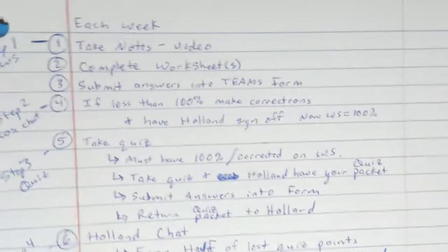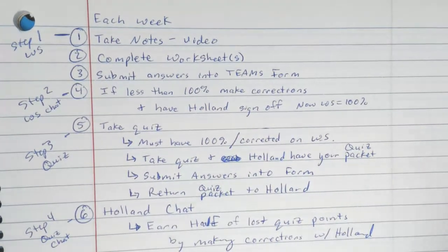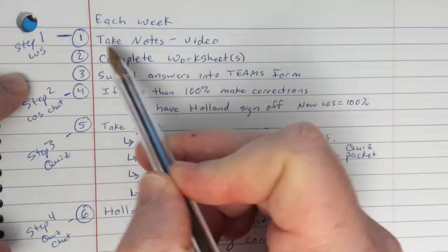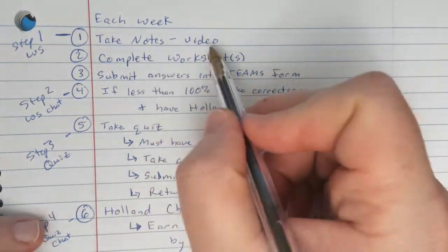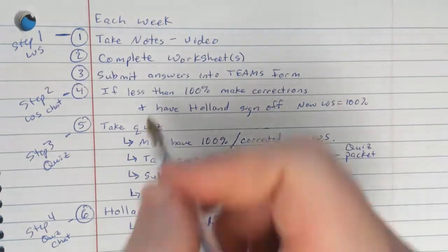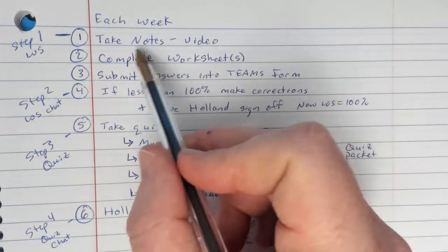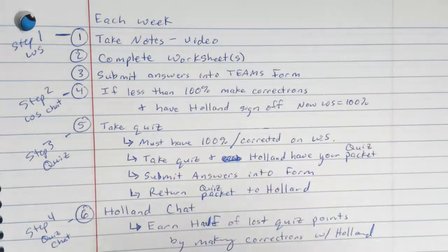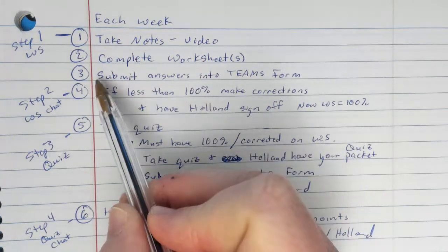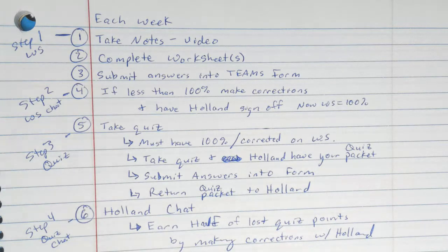So what are we going to be doing each week? There's basically four steps to this. Step one is the worksheets. Now, how do we do the worksheets? First, take the notes from the video. I'll be doing most of the worksheets for you just to get a nice little refresher, get that out of the way. After you watch the video and take notes, complete the worksheet. I'm not going to be doing it all. You just need to finish whatever I didn't finish. And then after you've completed the worksheets, you need to submit your answers into the Teams form.